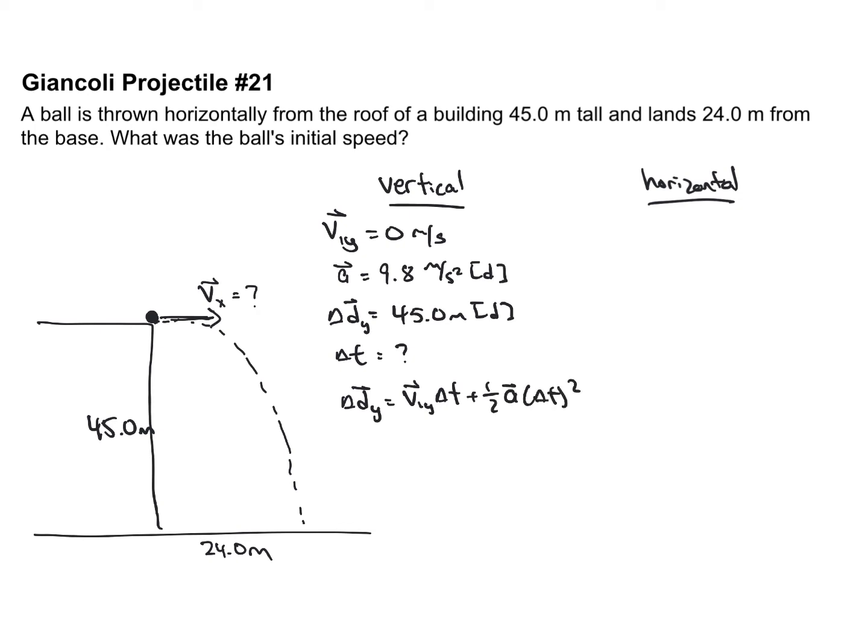The zero term for starting velocity cancels out. The v1 delta t term, that's going to equal zero. That'll simplify our equation. So we solve for time. I'm going to do all the algebra in my head. It will end up being plus or minus the square root of two times the displacement divided by the acceleration.